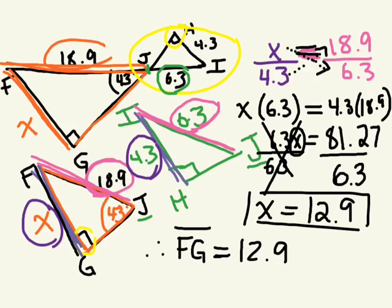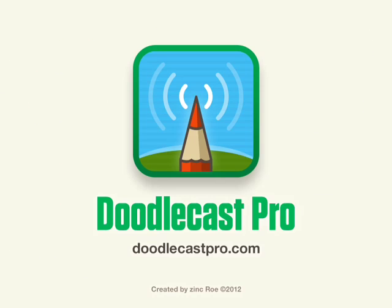Kind of makes sense. So this side length is 18.9, this one was 4.3, and this one was 6.3. So this triangle is actually smaller, right? So this is 12.9. And we just solved to find FG. Made with DoodleCast Pro.